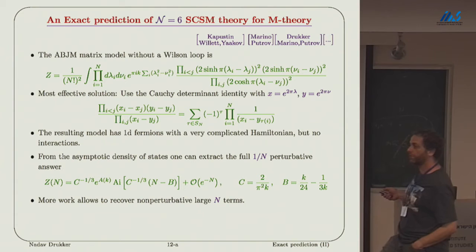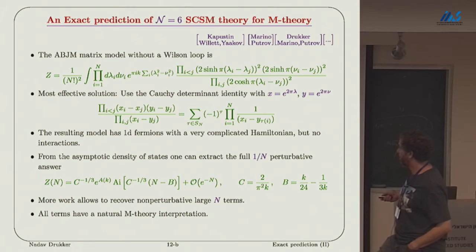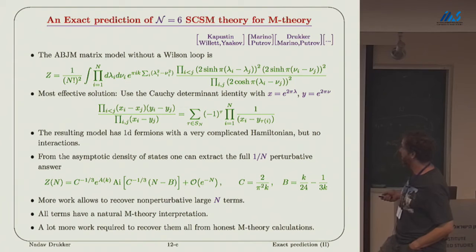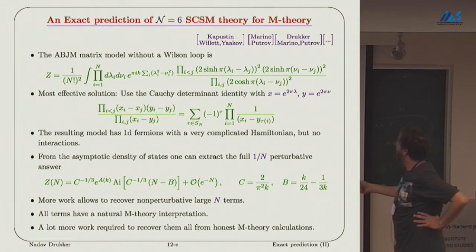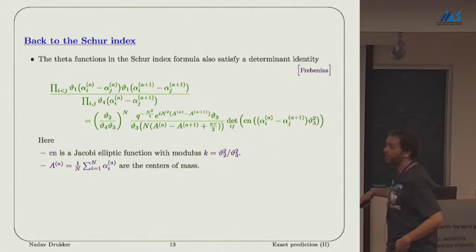Then there are non-perturbative corrections, which actually by now are also known in closed form, but they are very complicated. All terms have a natural M-theory interpretation, but actually to get even these, all these numbers, these factors, and certainly all the coefficients, numerical coefficients of the non-perturbative corrections, which are string instantons, D-brane instantons, or M-brane instantons wrapping different cycles, they are known what they are, but a full honest M-theory calculation to get them, I don't think exists.